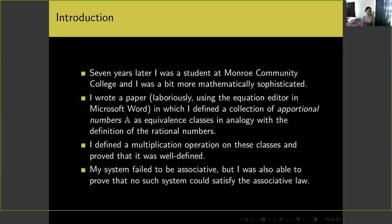This system failed to be associative. But I was actually able to show that no such system could satisfy the associative law — it wasn't just that I had failed to come up with a good system. Under specific conditions, it is impossible to construct a system with an associative multiplication where you have numbers like one over zero.